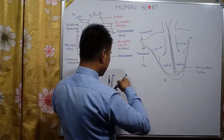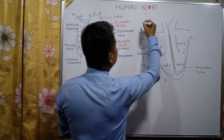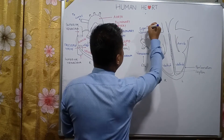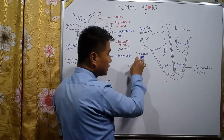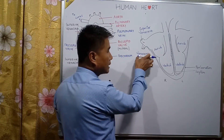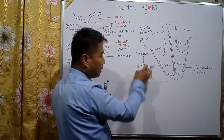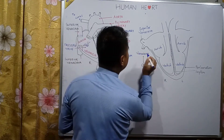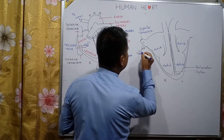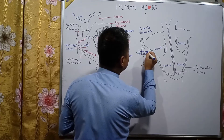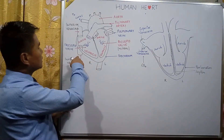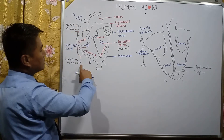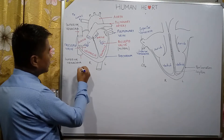This blood vessel is known as the superior vena cava, and since this vena cava carries carbon dioxide-containing blood from the lower portion of the body, it is known as the inferior vena cava. Both carry carbon dioxide-containing blood to the right auricle.